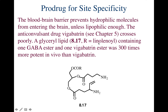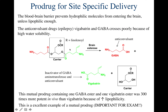A glycerol lipid known as linoloyl contains one GABA ester and one Vigabatrin ester, and it is 300 times more potent in vivo than Vigabatrin alone. We know that GABA is the anticonvulsant, and Vigabatrin is an inactivator of GABA aminotransferase and also an anticonvulsant. Both drugs contain carboxylic acids — they will be ionized at physiological pH and won't be lipid soluble enough to cross the blood-brain barrier.